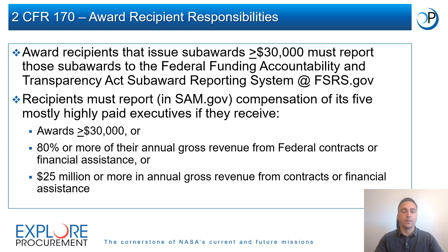Recipients must also report the compensation of each of their five most highly paid executives if they receive awards equal to or greater than $30,000, 80% or more of their annual gross revenue comes from federal contracts or financial assistance, or they receive $25 million or more in annual gross revenue from contracts or financial assistance.